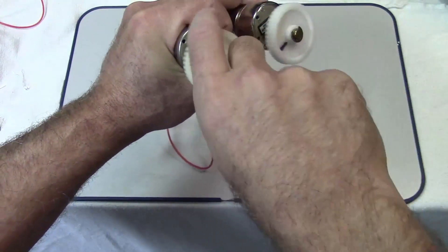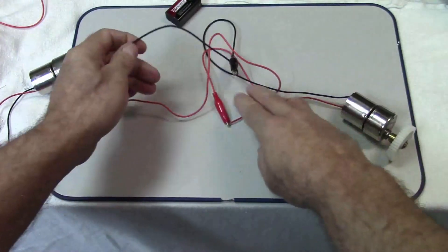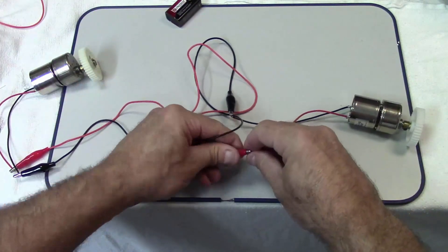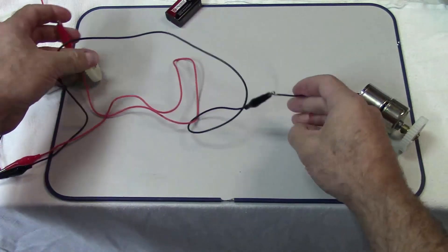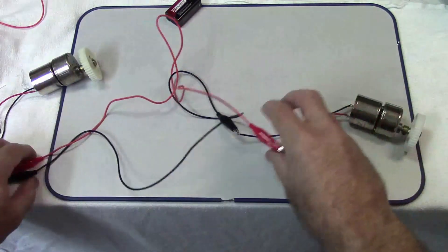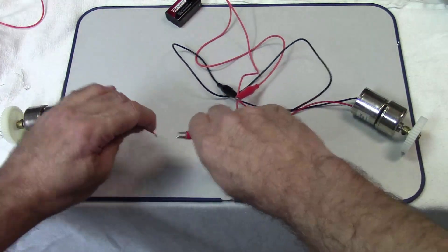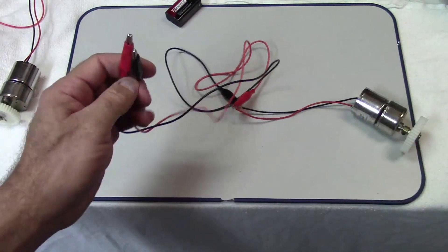This is dynamic braking. Let's show another version of this. Dynamic braking is a very important idea, and it's really just a form of the conservation of energy.